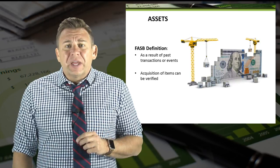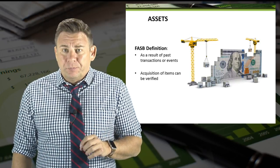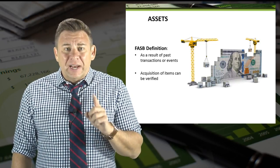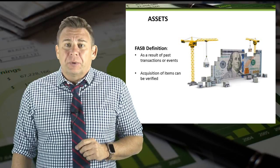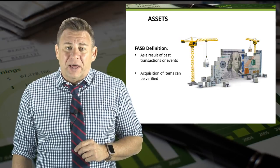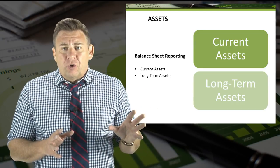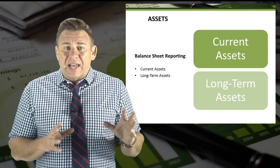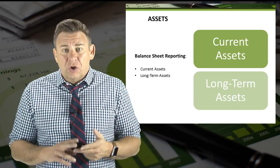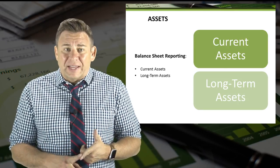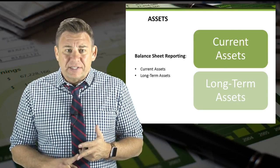If these three components describe an item, then that item is an asset and needs to be reported on the balance sheet. Balance sheet reporting of assets classifies them into two categories: current assets and long-term assets.